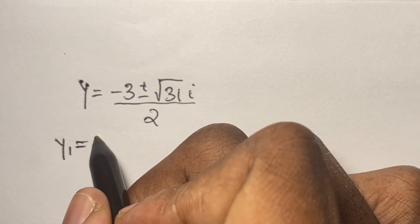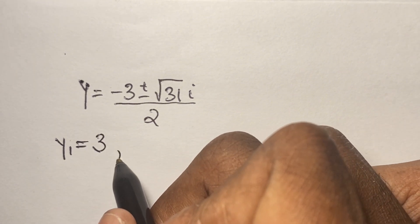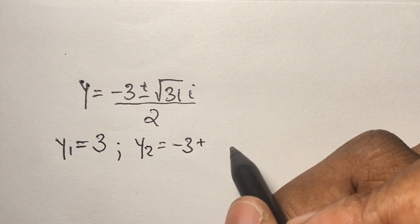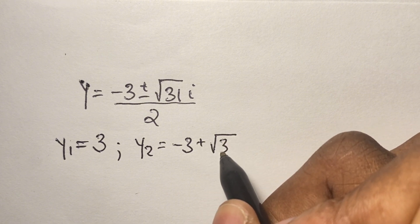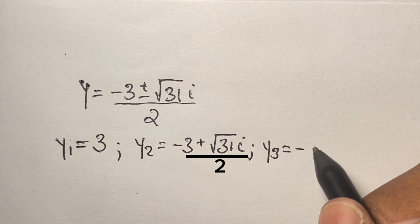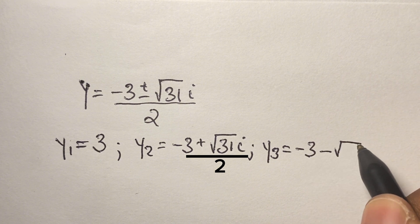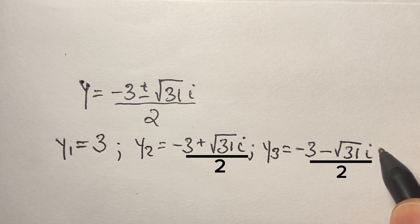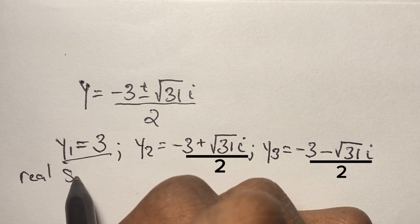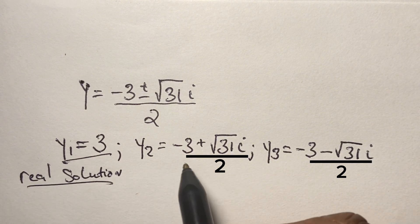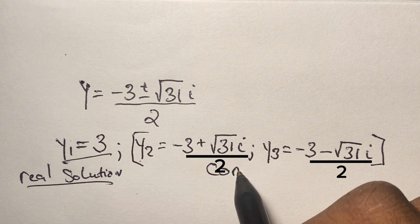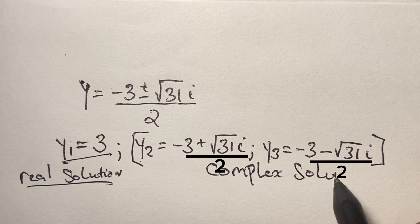So we have three solutions for y. Our first solution is y equals 3, which is our real solution. Our second solution is y equals negative 3 plus the square root of 31 times i, over 2, and the third solution is y equals negative 3 minus the square root of 31 times i, over 2. These last two are what we call complex solutions.